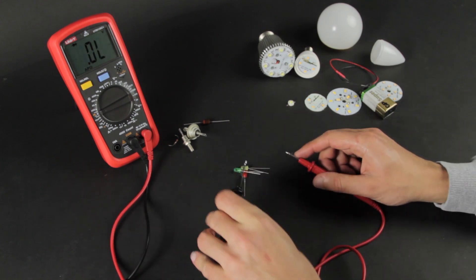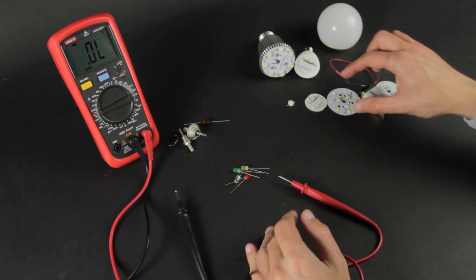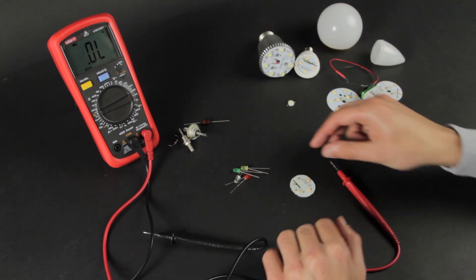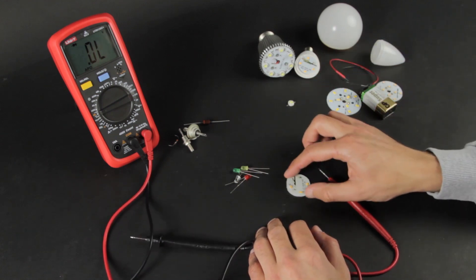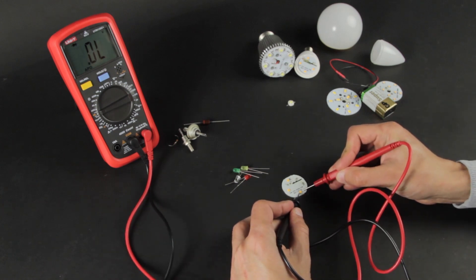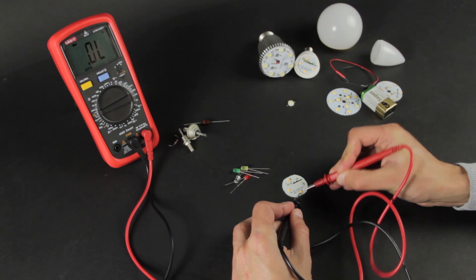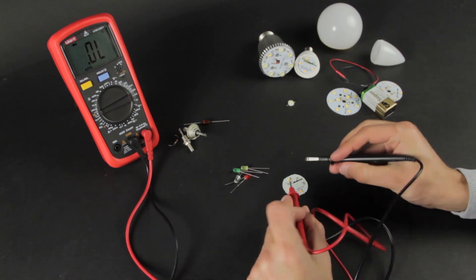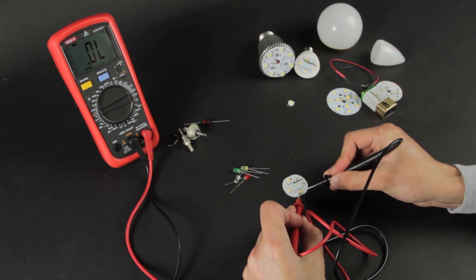However, it may be not enough for lighting up some SMD LEDs. Have a look. We take the PCB from a light bulb. One of the diodes is working. We checked it before. We touch it with probes. Nothing happens. We repeat with probes switched. Same result.